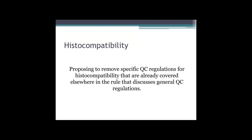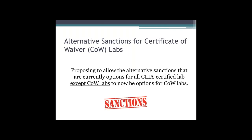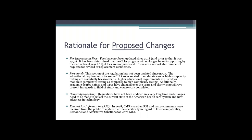Specific to histocompatibility, there are some quality control regulations being proposed to be removed, as these are items already covered elsewhere in the general quality control section of the rule. Finally, the proposed rule has included the ability for CMS to impose the same sanctions on Certificate of Waiver labs that they do for moderate and high-complexity labs in the event of non-compliance. Generally speaking, the revisions coming out in this proposed rule are long overdue, and we'll see how the final rule reads when it comes out in the next few months.